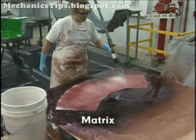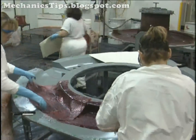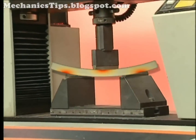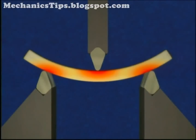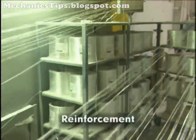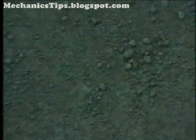The matrix functions as a binder for the reinforcement and controls the physical shape and dimensions of the part. The primary purpose of the matrix is to transfer the load or stress applied to the composite to the reinforcement. The matrix also protects the reinforcement from adverse environmental effects. The reinforcement's function is to improve the mechanical properties of the composite and is typically the main load bearing element. Reinforcement is usually in the form of fibers or particles.